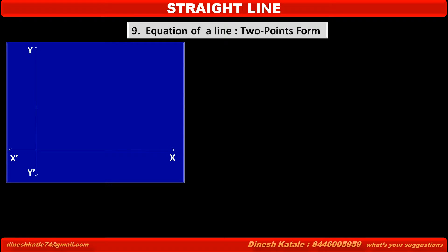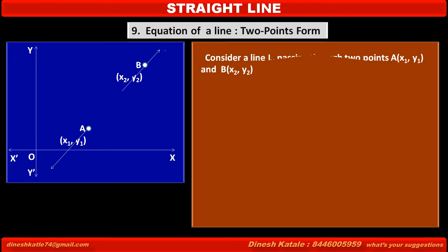Consider a coordinate system. Consider a line L passing through two points, A(x₁, y₁) and B(x₂, y₂).